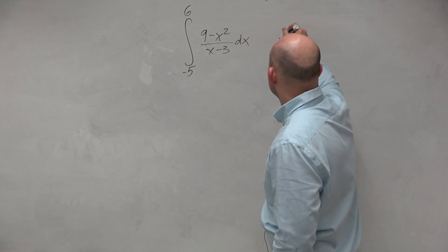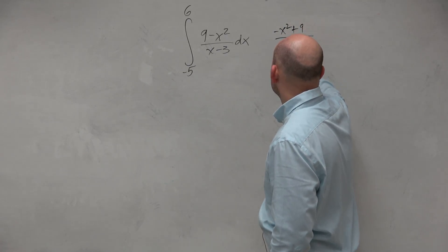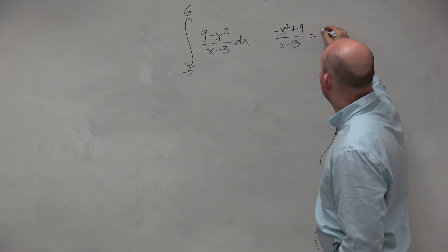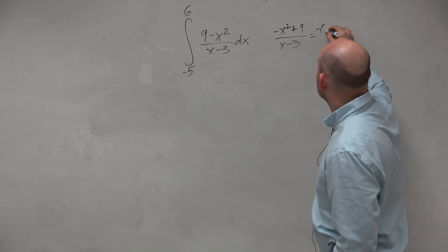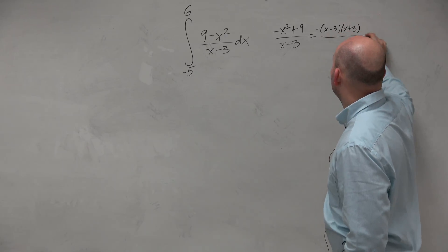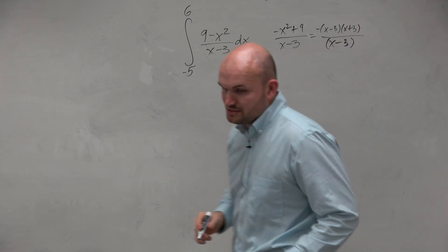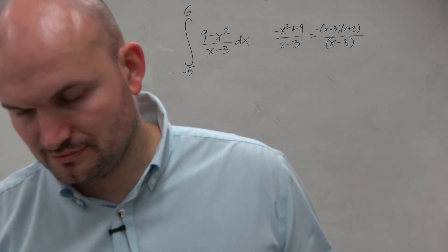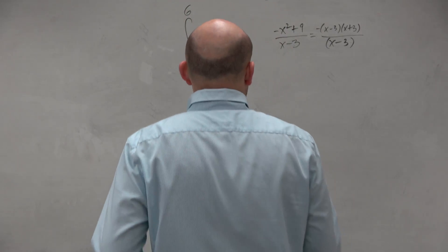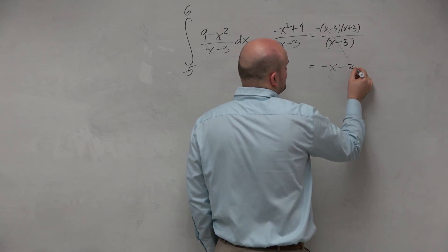I can rewrite this as negative x squared plus 9, all over x minus 3. And that can be simplified — let's factor out a negative — so that'd be an x minus 3 times x plus 3, all over x minus 3. That divides out and we're left with negative x minus 3.